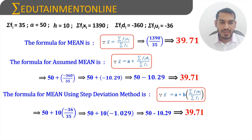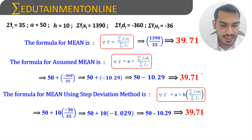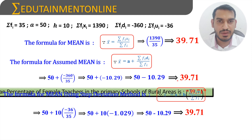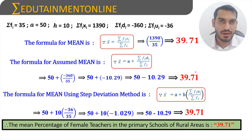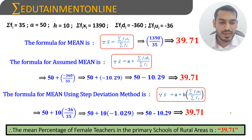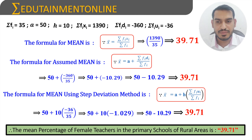We get mean = 39.71 in all three cases. Sometimes there may be a small difference, but approximately the mean will be the same across all methods. Therefore, the mean percentage of female teachers in the primary schools of rural areas is 39.71.